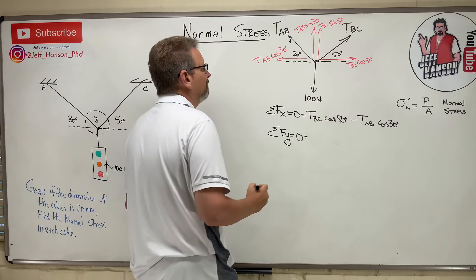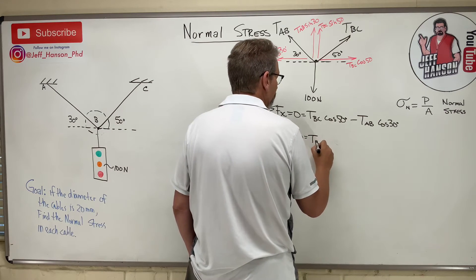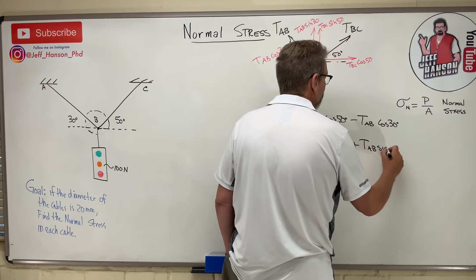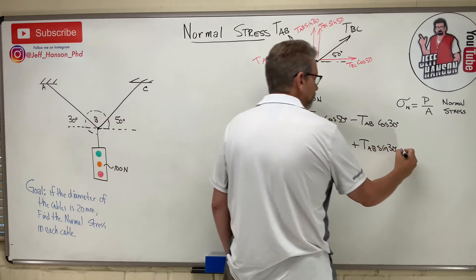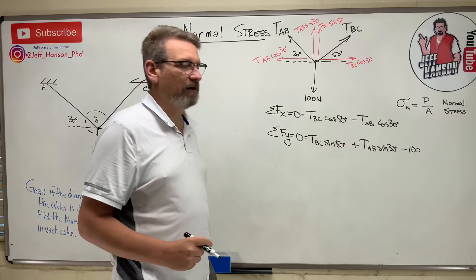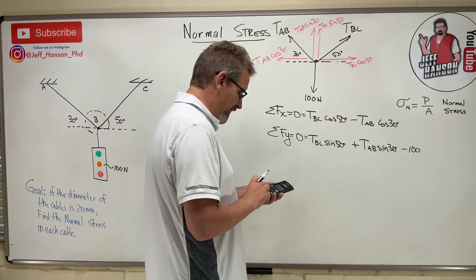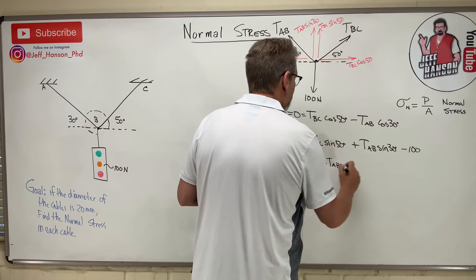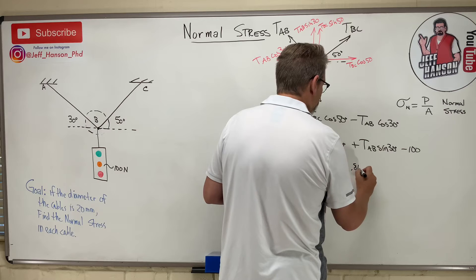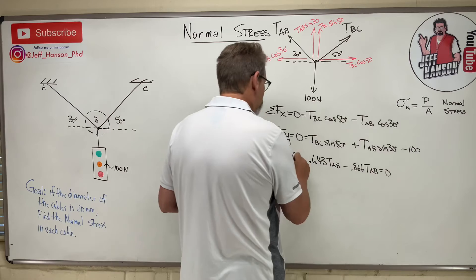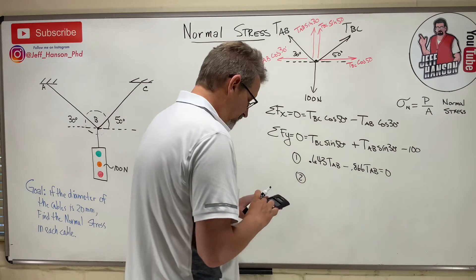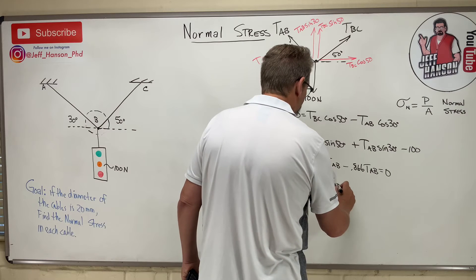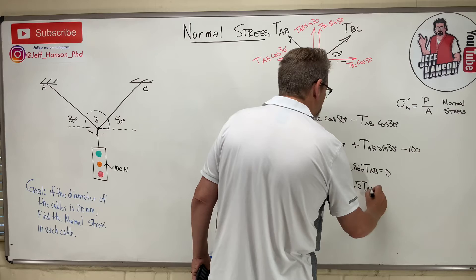This is T_BC cos 50, T_BC sine 50, T_AB cosine 30, and T_AB sine 30. There's everything broken into components, so I should be able to write my equations: sum of the forces in the x, sum of the forces in the y. In the x direction I've got T_BC cos 50, and what else do I have? Minus T_AB cos 30. And in the y direction I've got T_BC sine 50, and then I've got T_AB sine 30, and then I have minus 100.